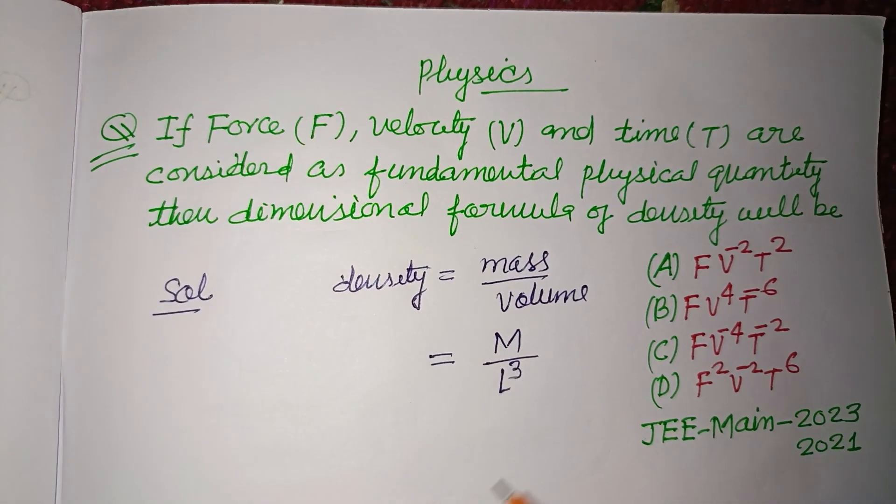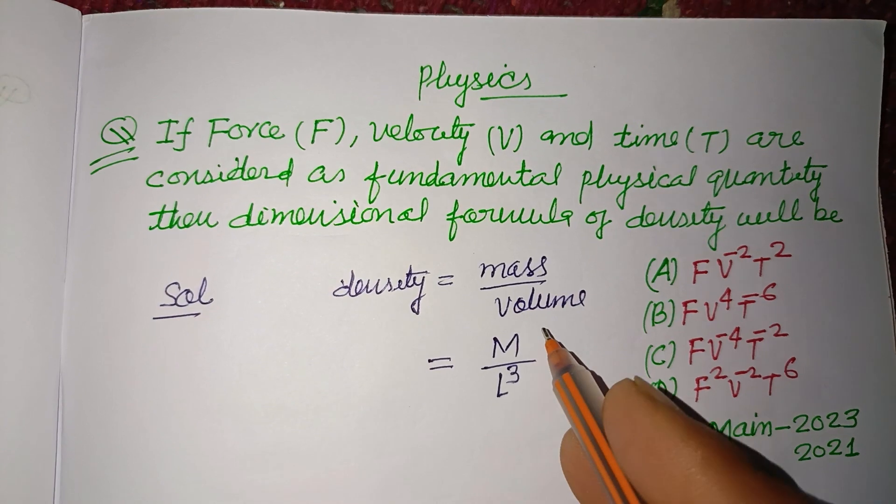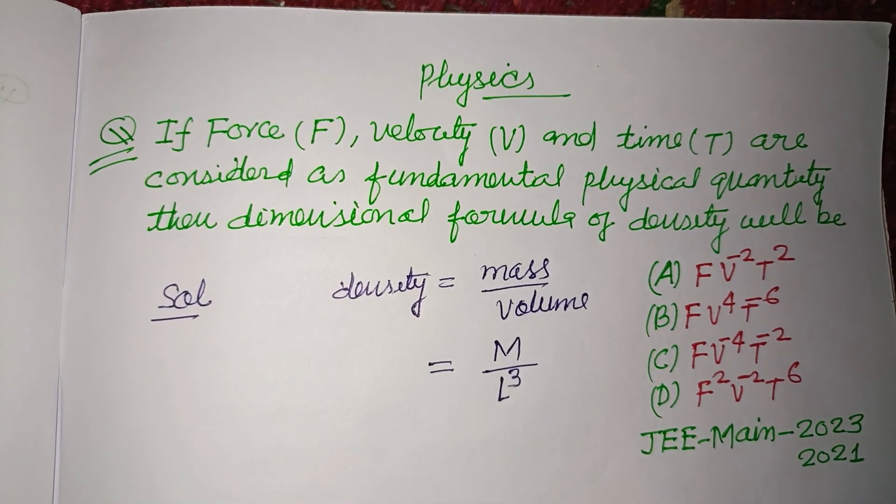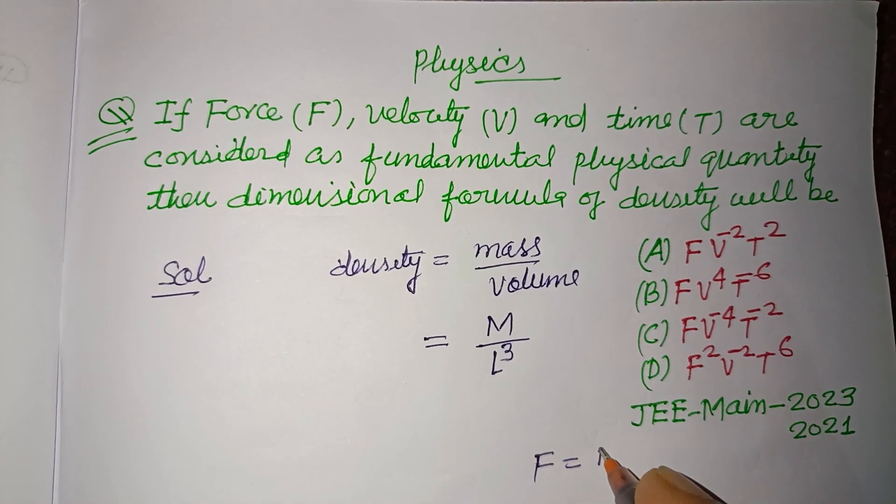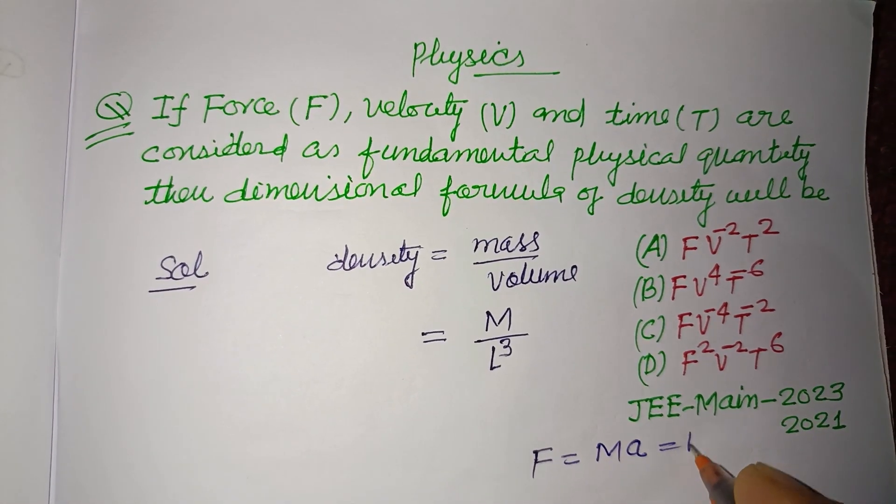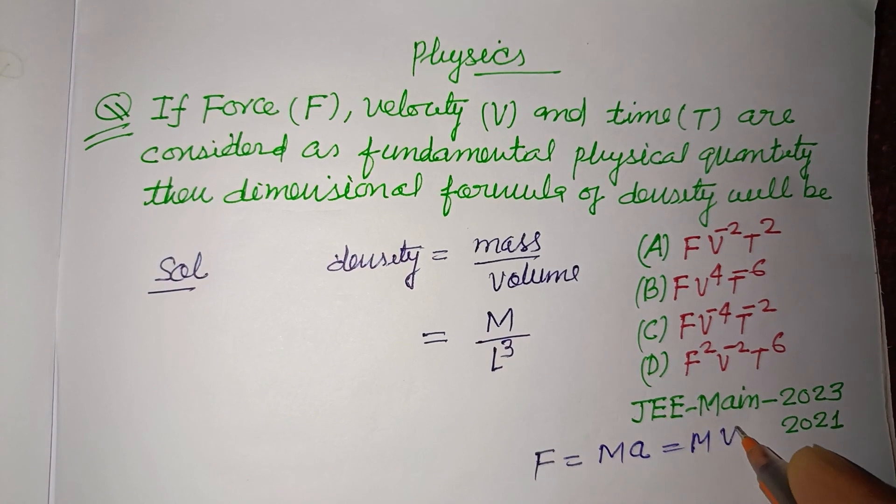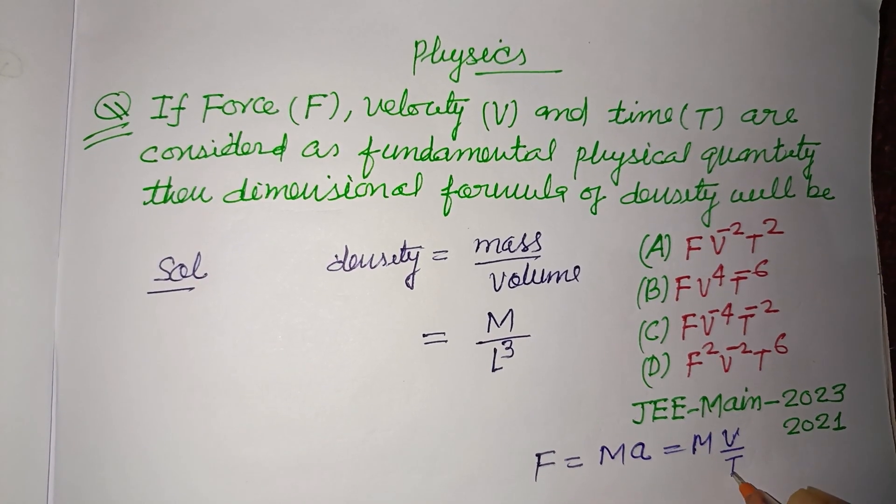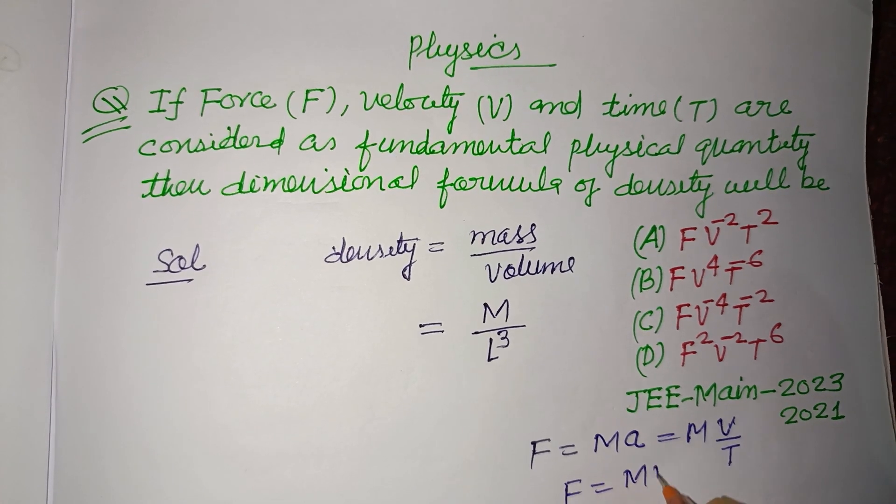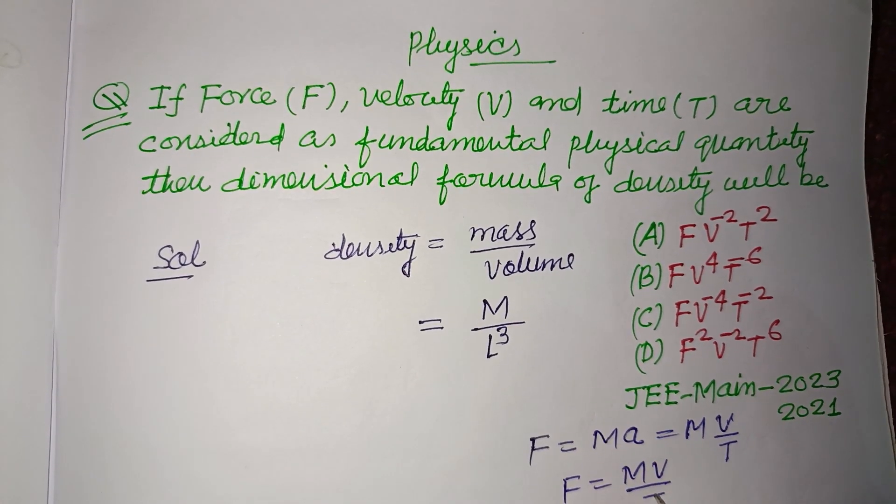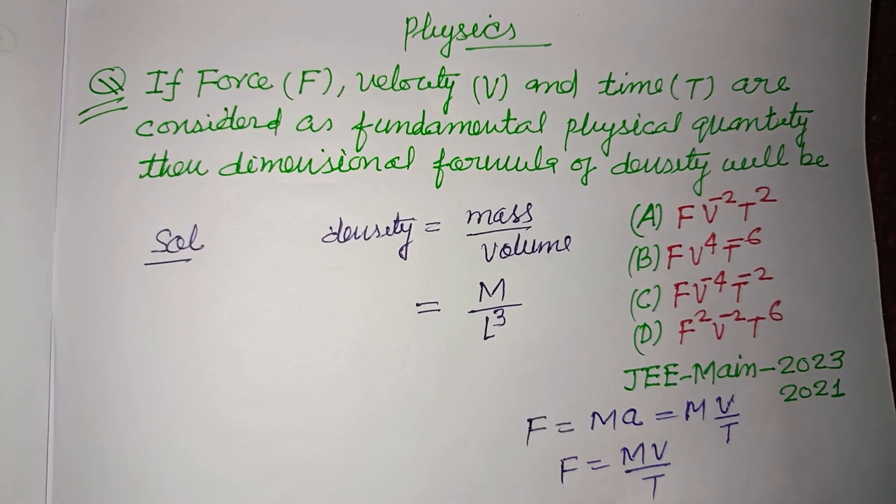You know that F equals Ma, where a is acceleration and M is mass. So a equals V upon T; velocity upon time is acceleration. From here we get mass in terms of velocity, time, and force: M = FT/V.